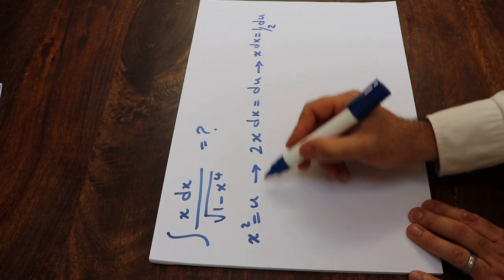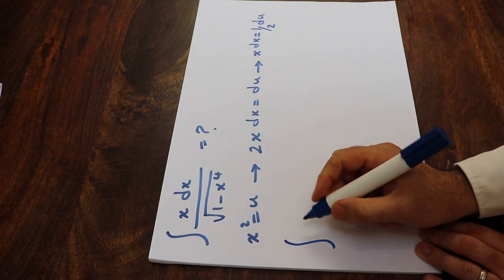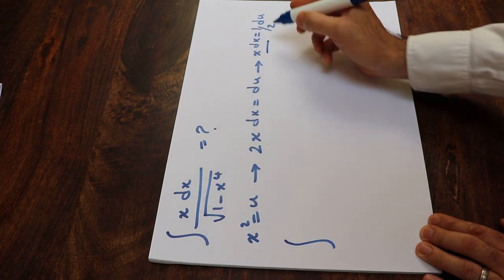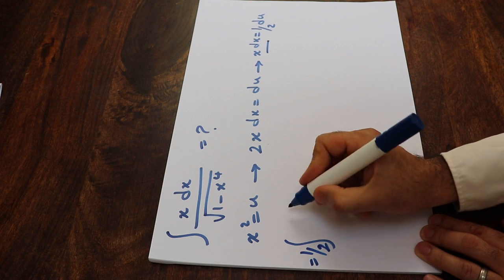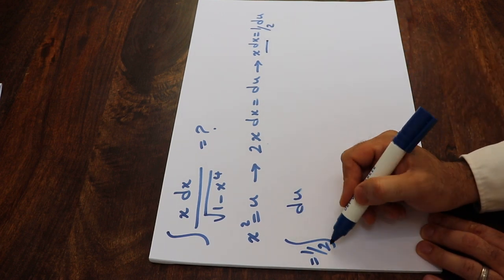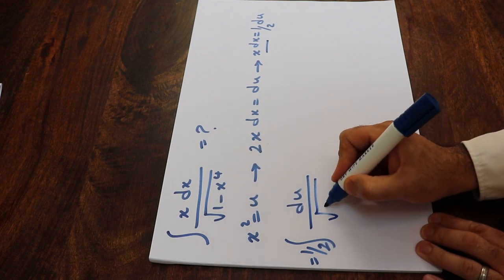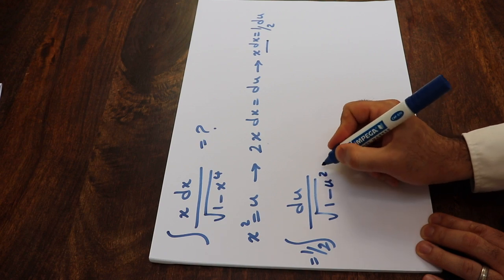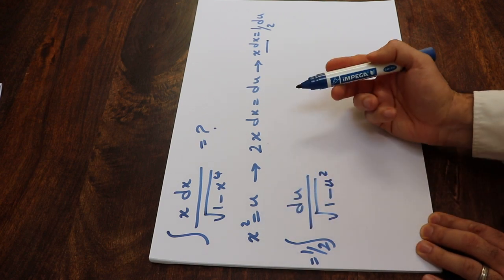Now if you substitute this expression into this integral, instead of x dx, I simply write 1/2 du. Since 1/2 is a constant, I take it out of the integral. And instead of x⁴, I write u², because x² is u, therefore x⁴ is u².